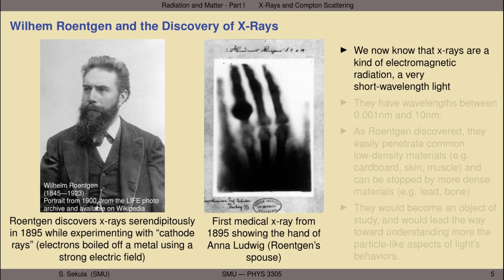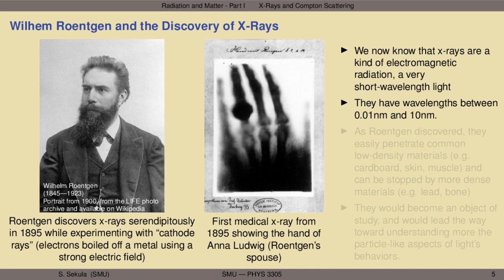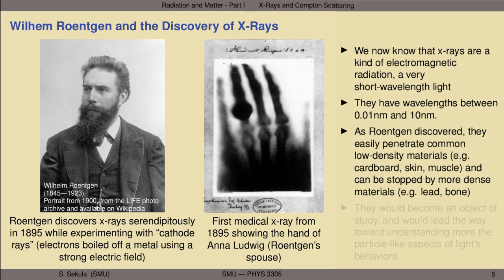We now know that x-rays are a kind of electromagnetic radiation — a very short wavelength of light. You can't see them with your eyes, but with the right instrumentation, you can induce a signal that can be seen. They have wavelengths ranging at their smallest between 0.01 nanometer all the way up to 10 nanometers. As Röntgen discovered, they easily penetrate common low-density materials — think cardboard, skin, muscle. Most x-rays will pass through those undeflected and unstopped.